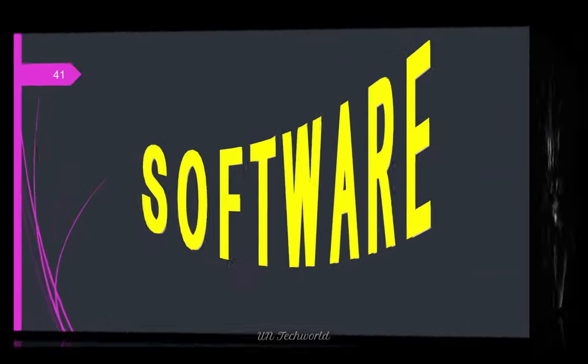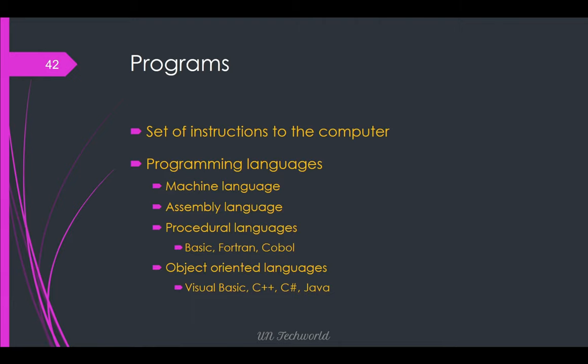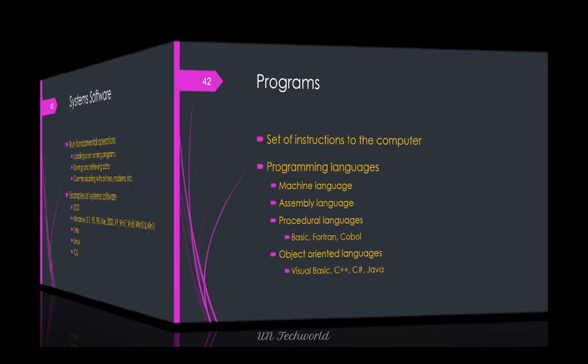Now moving on to software. The setup instructions of the computer are called software, also called a programming language. Types include machine language, assembly language, procedural language such as BASIC, FORTRAN, COBOL, and object-oriented languages like Visual Basic, C++, C#, Java, Oracle, etc.